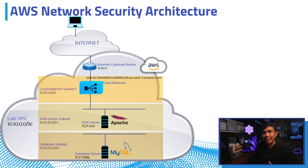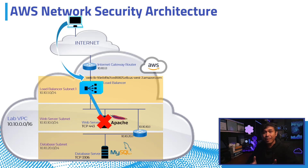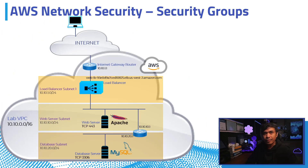Both the web server and the database subnet can route to each other. In our initial testing, we directed our web browser to the load balancer DNS URL, and we were unable to receive a response from the Apache web server. Because there were no security group allowed rules configured yet.